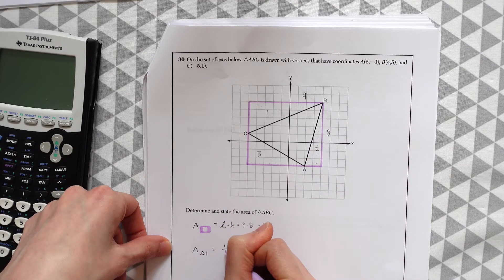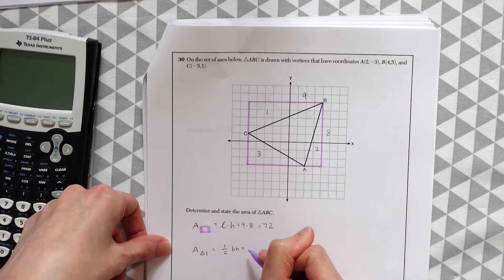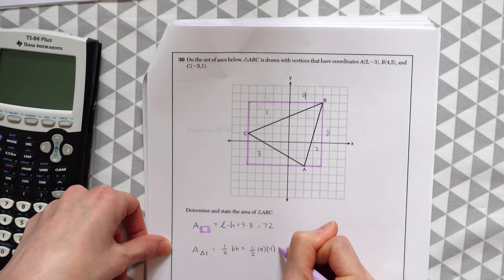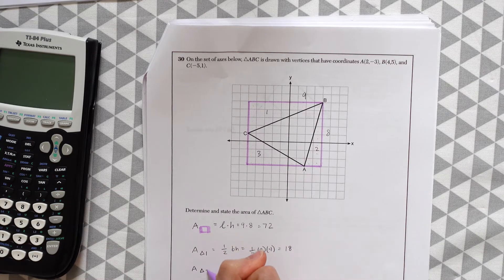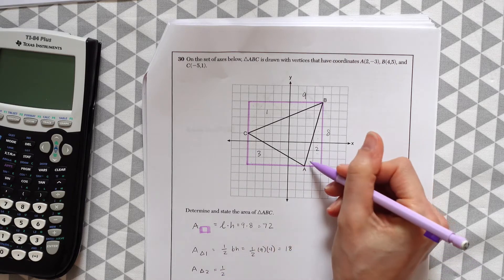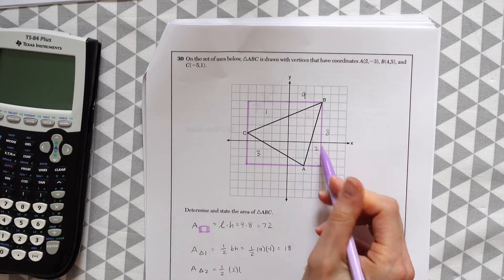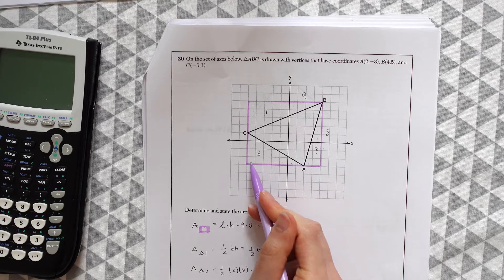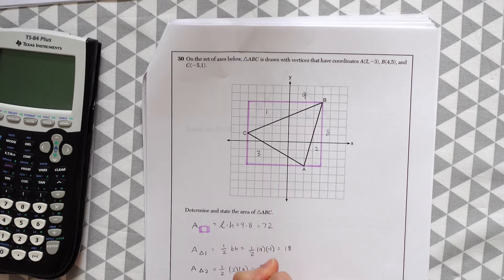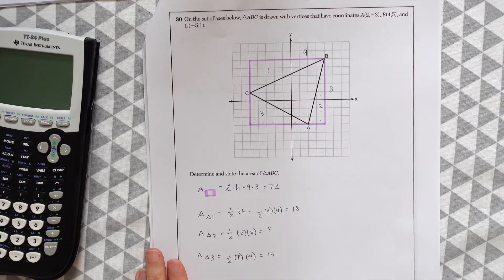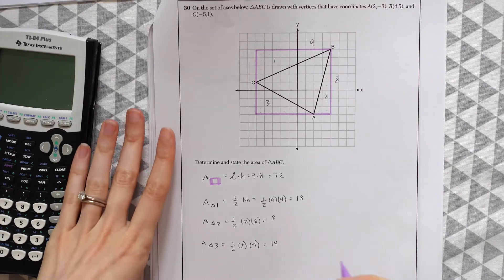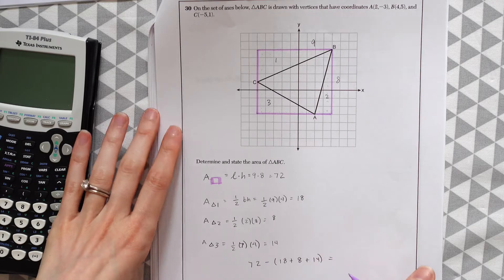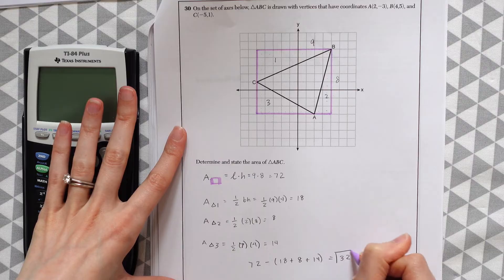The area of triangle 1 is one-half base times height: one-half times 9 times 4, giving us 18. Triangle 2, one-half base times height: base is 2 and height is 8, giving us 8. Triangle 3: one-half times 7 times 4, giving us 14. So now all I need to do is take 72 and subtract all these areas: 72 minus 18 plus 8 plus 14. When you plug that into your calculator you get 32, which is our answer.